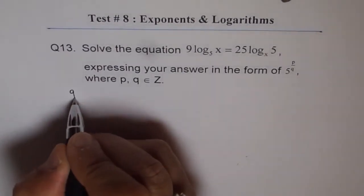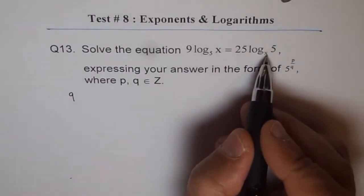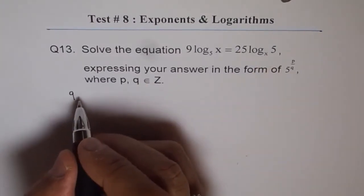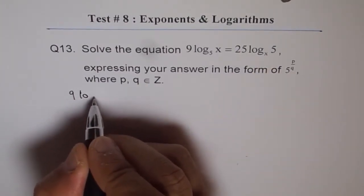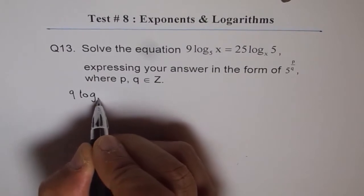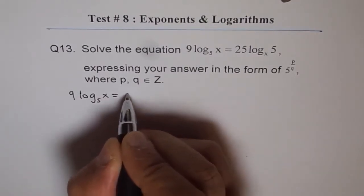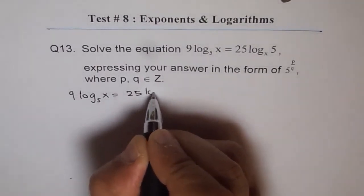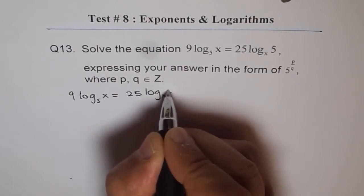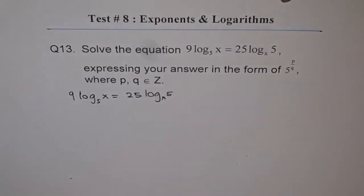So, the first step which I'm going to do is write this as base 5. So, that's the first step I'm going to do. Let me write this as it is. First, this is equals to 25 log x of 5. And here, we are going to use change of base.